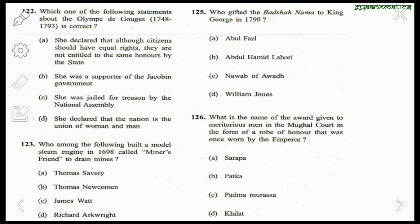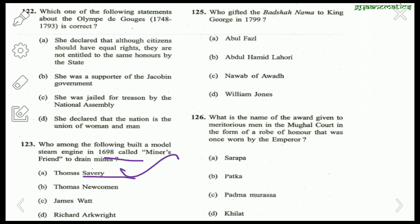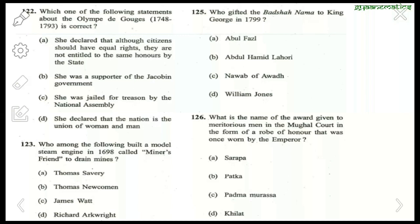Question about Olympe de Gouges (1748–1793): she was a French lady who declared that the nation is a union of women and men. The right answer is D. Question: Who built a model steam engine in 1698 called 'Miner's Friend' to drain mines? Thomas Savery was the person who built this steam engine in 1698. Regarding Badshahnama: the Nawab of Avadh gifted it to King George in 1799.